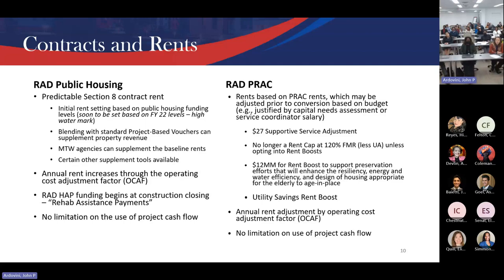An owner can show HUD how they're going to do these resiliency and preservation efforts and then get an additional rent boost on top of their field rent — capped at 120% of FMR. They can also qualify for utility savings. Regarding how the $12 million rent boost interfaces with GRP: it's not a grant or a loan — it's actually built into their subsidy, but they have to go out and borrow the money to pay for the work. It leverages hard debt. Once the RAD for PRAC conversion happens, there's a 20-year Section 8 contract adjusted by OCAF.